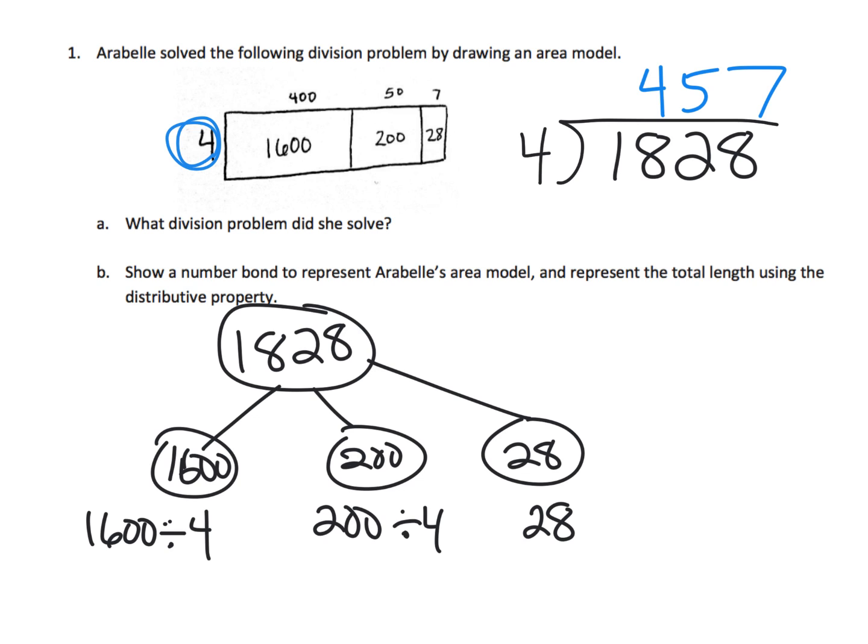and 28 divided by 4 is our next steps. And that gives us 450 and 7. And we got those numbers from up here, 457. So that's how we would represent this division using a number bond.